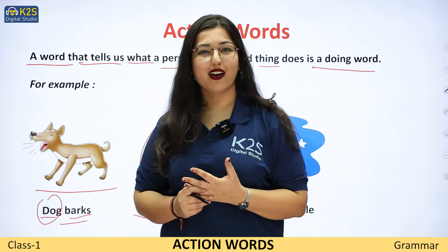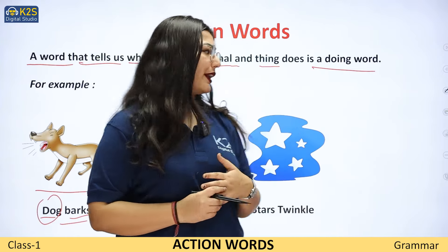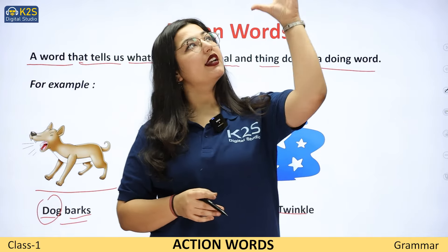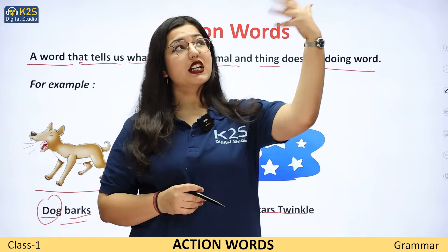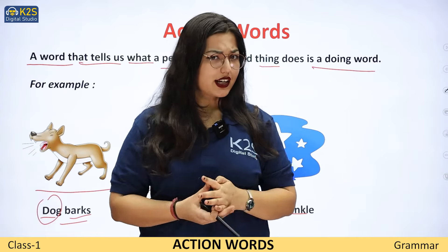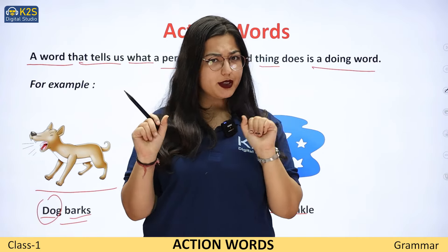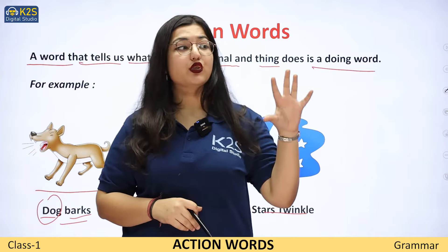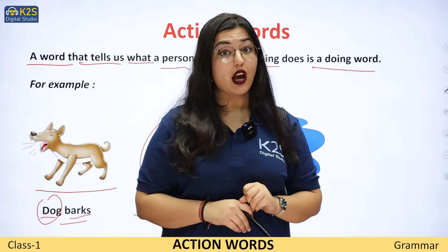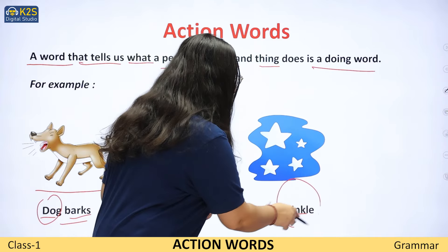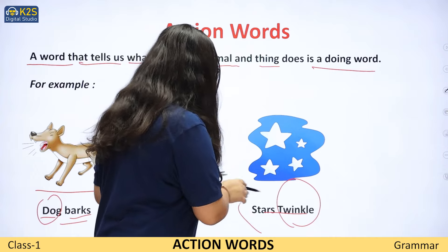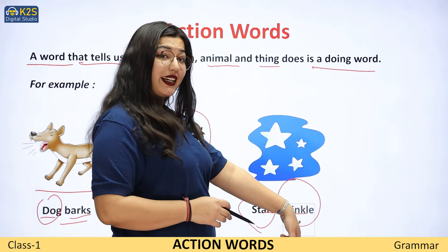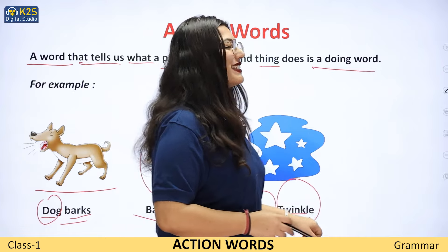Aap samajh mein aaya kya action words kya hote hai? Stars twinkle. Stars bhi mera noun hai, aur stars kya kar rahe hai? Chamak rahe hai, tim tim twinkle kar rahe hai. Toh kaunsa action kar rahe hai? Twinkling ka. Toh twinkling bhi kya ho gya? Action word ho gya. Stars kya ho gya? Noun. Aur noun kaunsa action kar raha hai? Twinkling ka action.